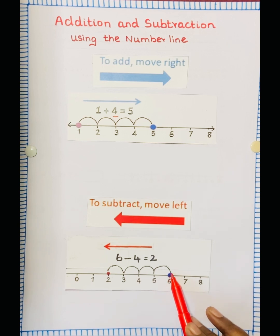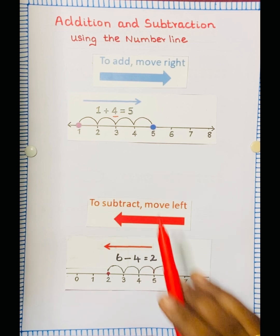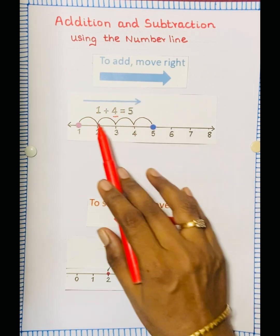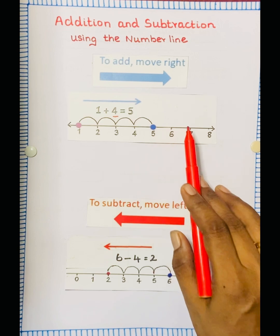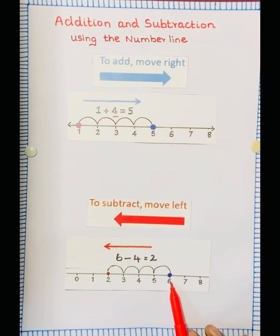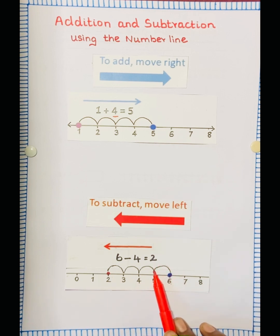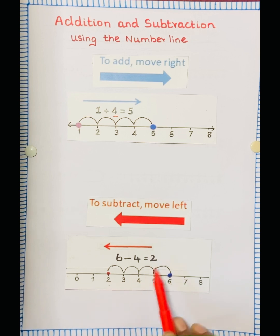So minus 4 — here we have to jump 4 to the left side. Keep the first number here. Starting from 6, jump 4 to the left side: 1, 2, 3, 4. See, the answer is 2.